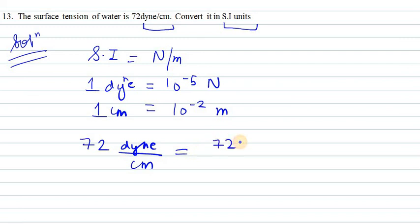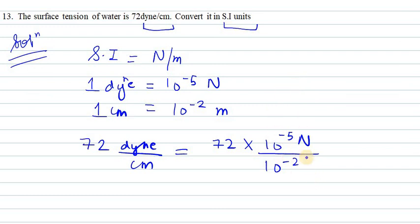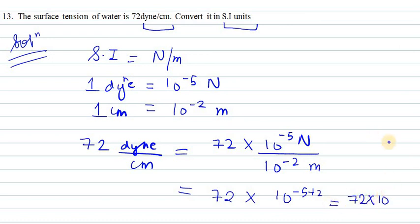72 dyne can be replaced with 10 raised to the power minus 5 Newton, whereas centimeter can be replaced with 10 raised to the power minus 2 meter. When we simplify this, we have minus 5 at the numerator and minus 2 at the denominator. Using the exponents rule, it becomes 10 raised to the power minus 5 plus 2, that is 10 raised to the power minus 3. So the answer is 72 into 10 raised to the power minus 3 Newton per meter, or 0.072 Newton per meter.